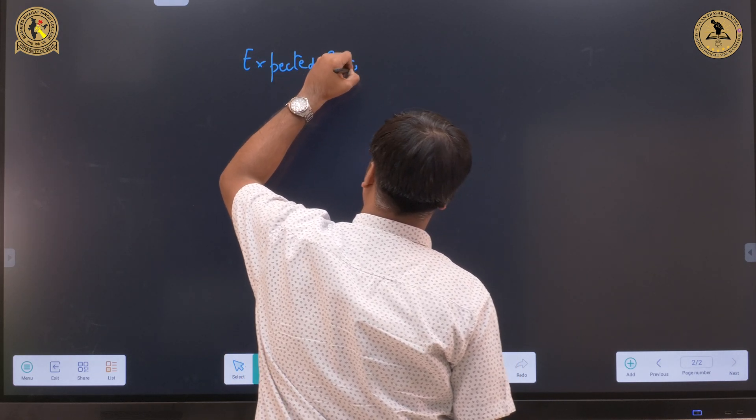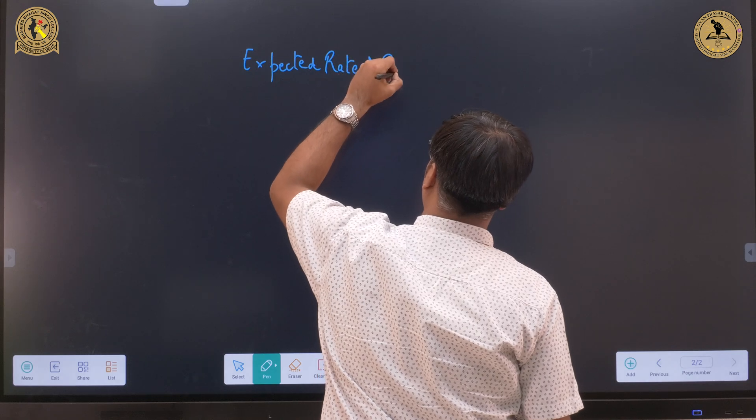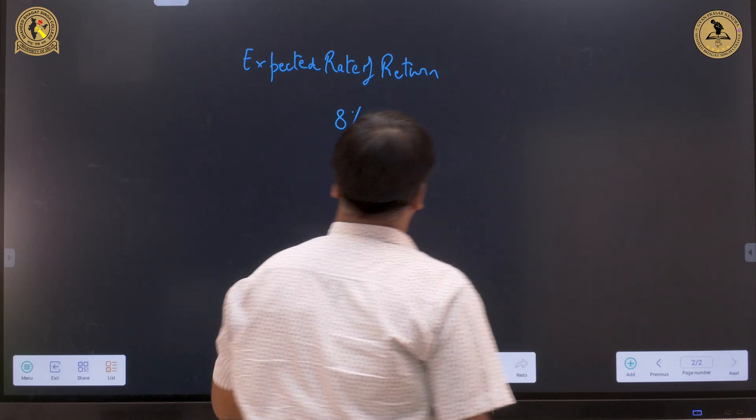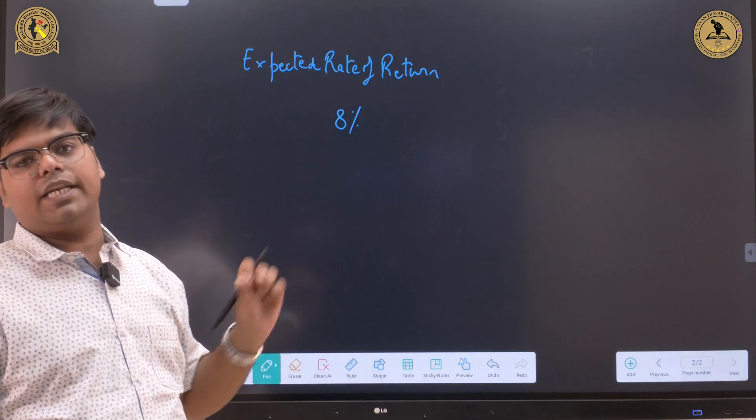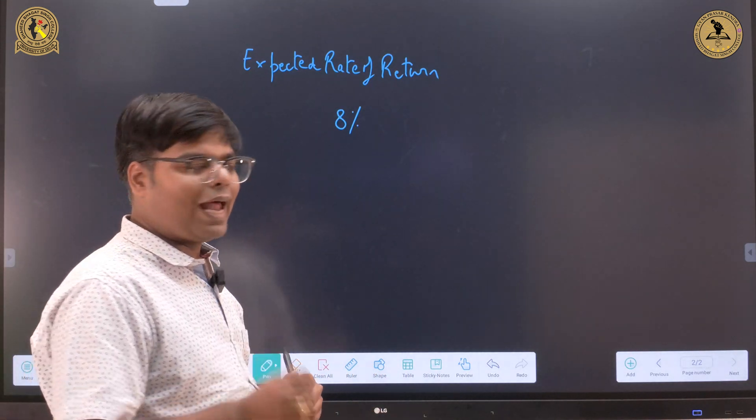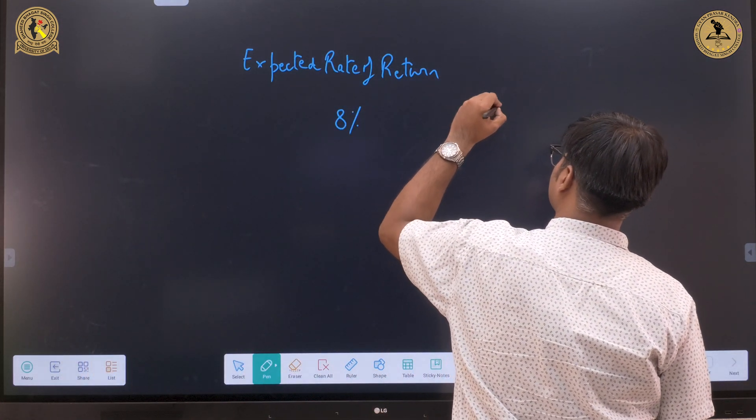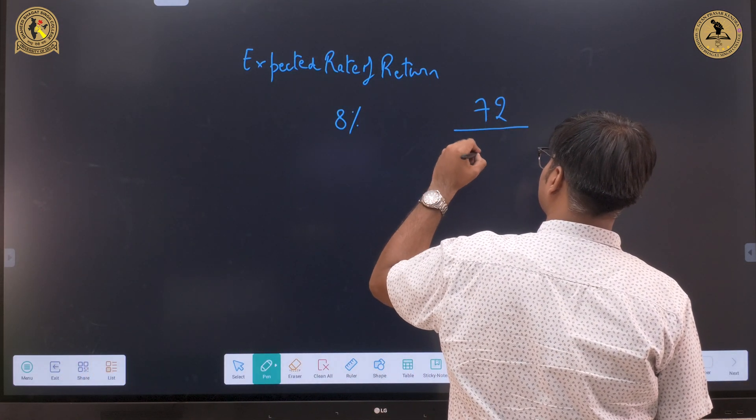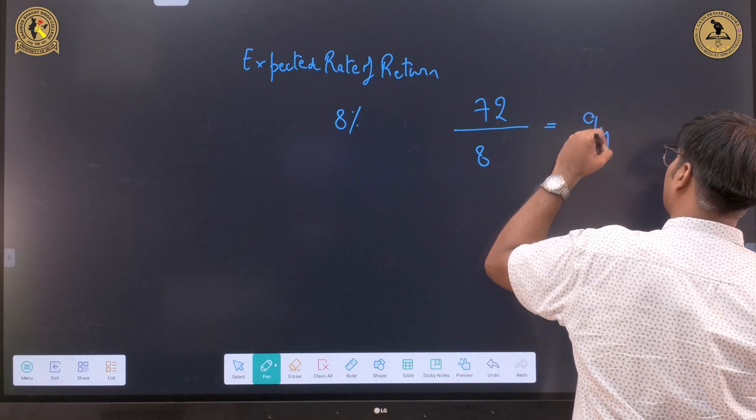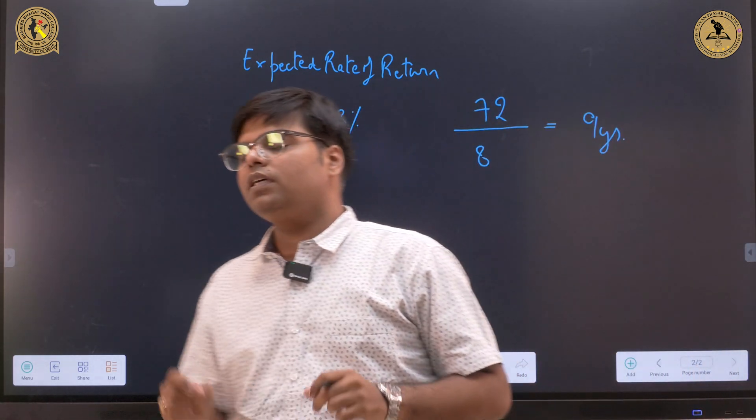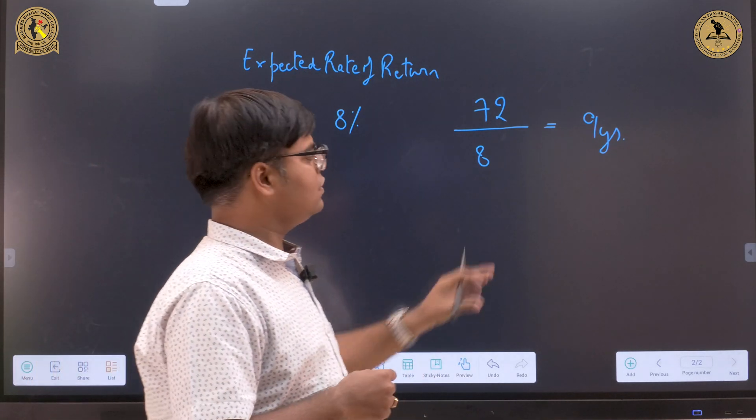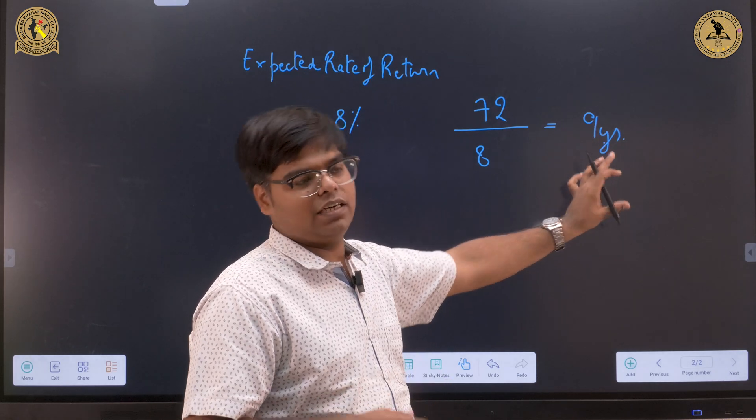Let us assume the expected rate of return is 8% per annum. So by applying this rule of 72, it means 72 divided by 8, this will give you 9 years. What does this mean?